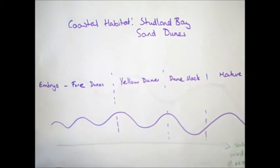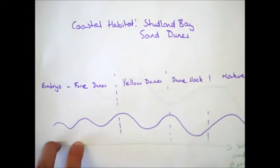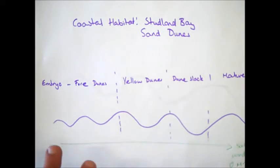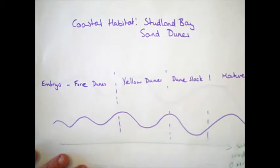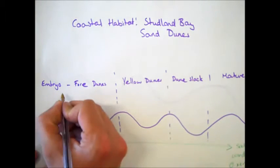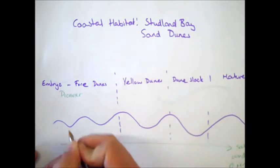If we start off in this first area here, looking at the embryo and the foredunes, these are the small dunes really close to the sea. Here, we're going to have what we call pioneer species.